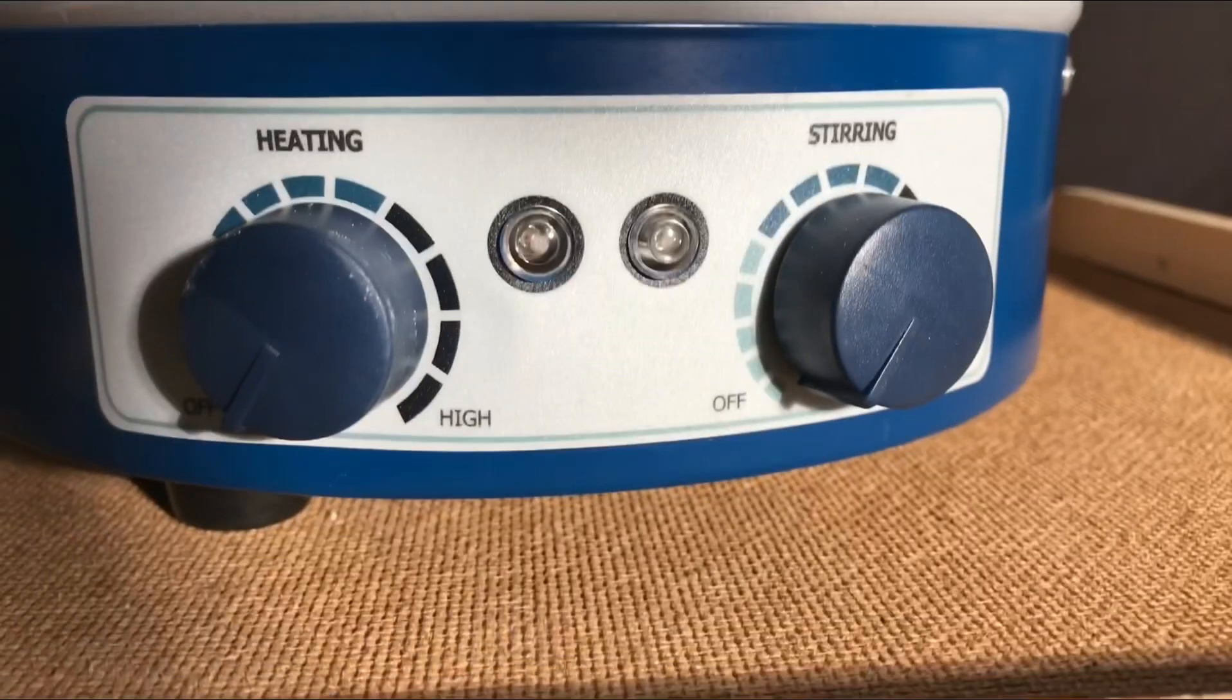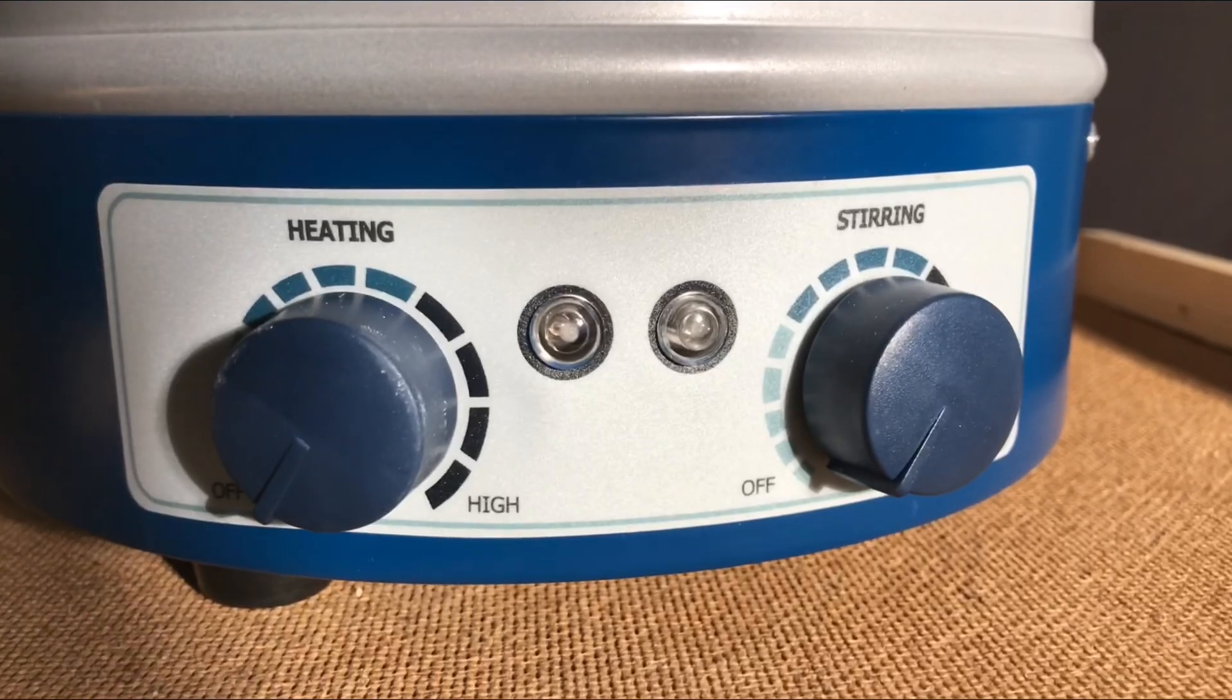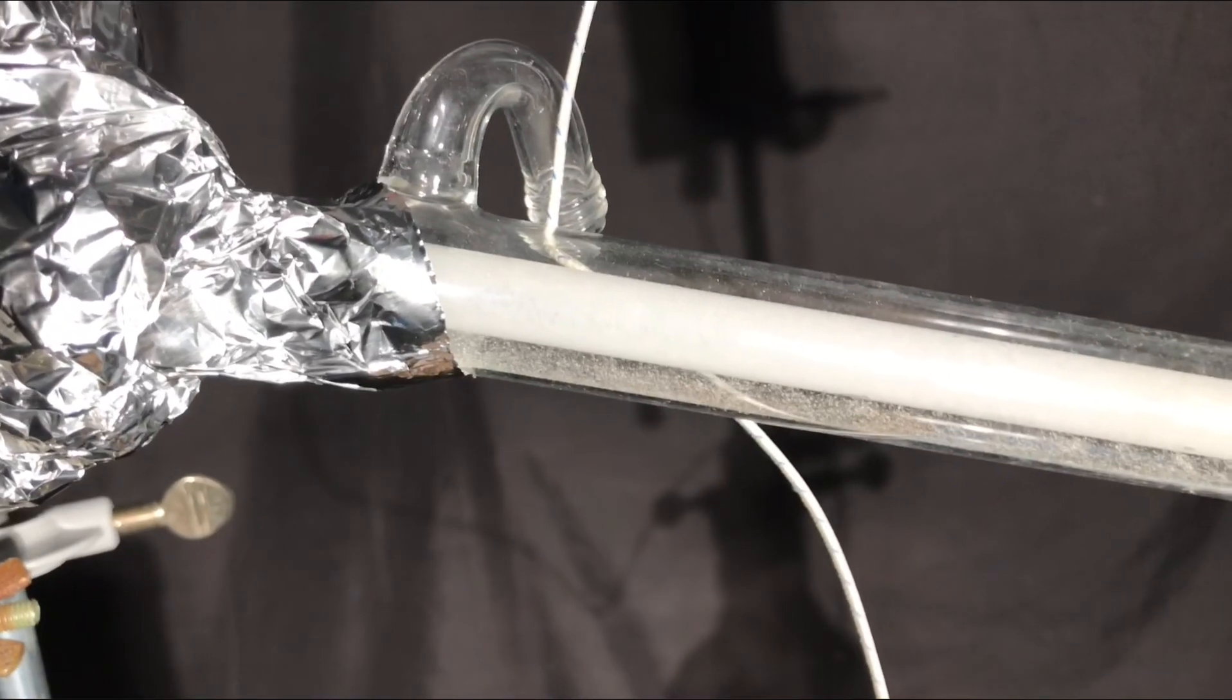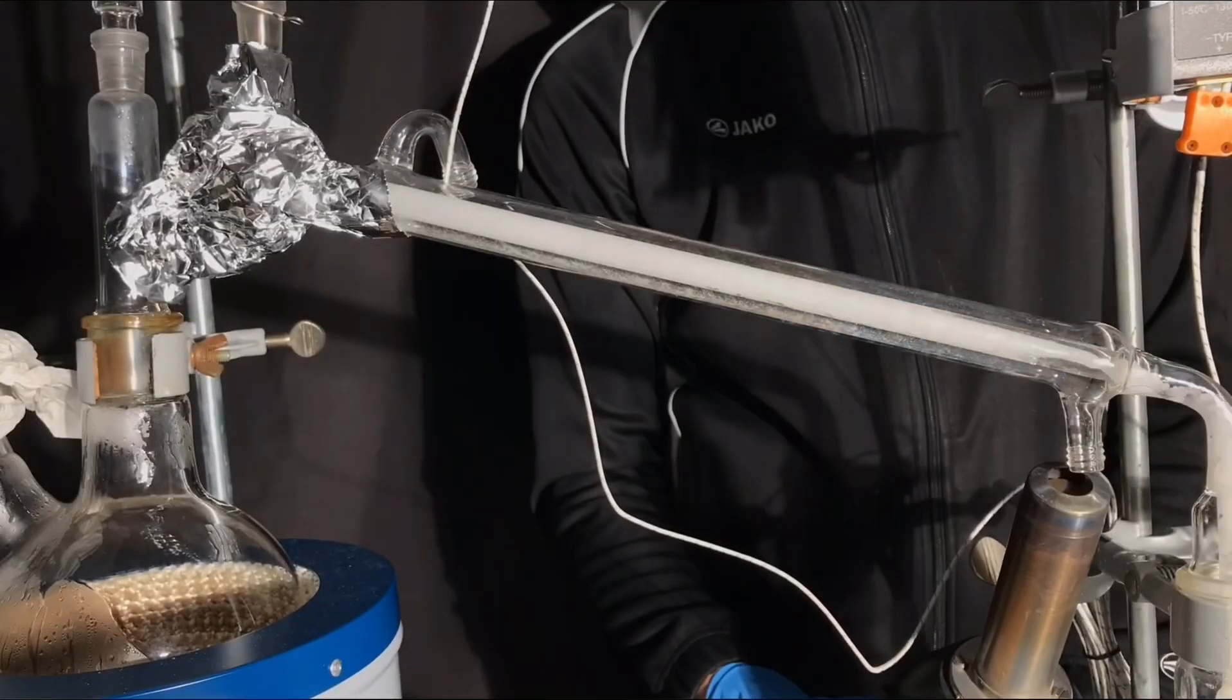Before the condenser could clog up completely, I turned off the heating mantle. If the condenser clogged up completely, overpressure would build up in the apparatus.